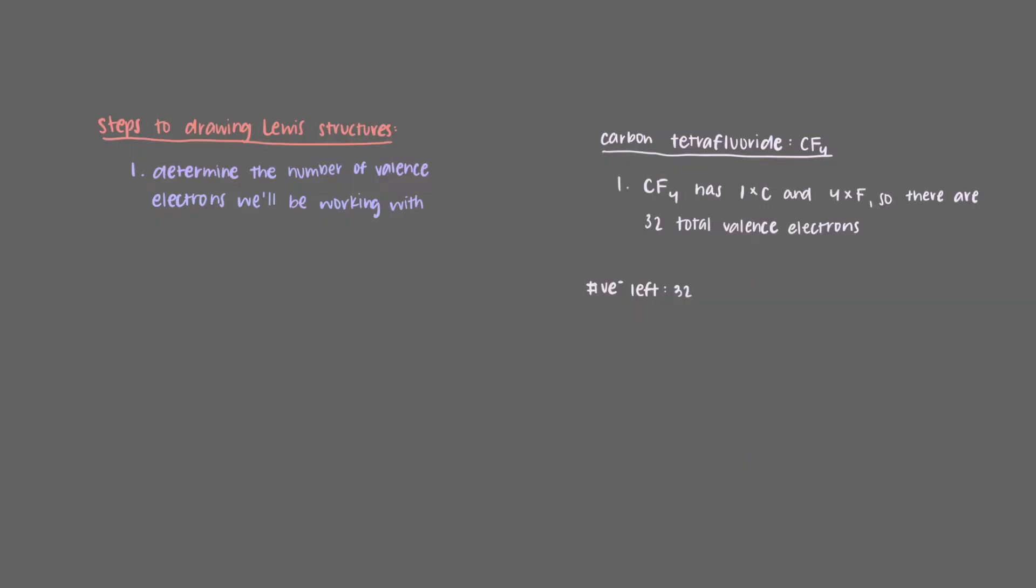In CF4, there are 4 fluorines and 1 carbon, which means that we have a total of 32 valence electrons. These valence electrons are what we have to work with when drawing our Lewis structure for CF4. We can't make electrons appear out of thin air, and we also can't make them disappear into thin air.